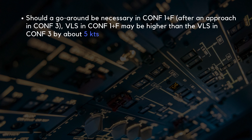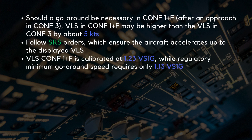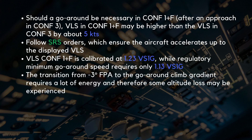Should a go-around be necessary in Config 1+F after an approach in Config 3, it's important to note that VLS in Config 1+F may be higher than the VLS in Config 3 by about 5 knots. The recommended procedure is to follow SRS orders, which ensure the aircraft accelerates up to the displayed VLS. VLS Config 1+F is calibrated at 1.23 VS1G, while the regulatory minimum go-around speed requires only 1.13 VS1G, so this speed requirement is comfortably met. The crew should also be aware that the transition from a minus 3 degree flight path angle to the go-around climb gradient requires a lot of energy, and therefore some altitude loss may be experienced.